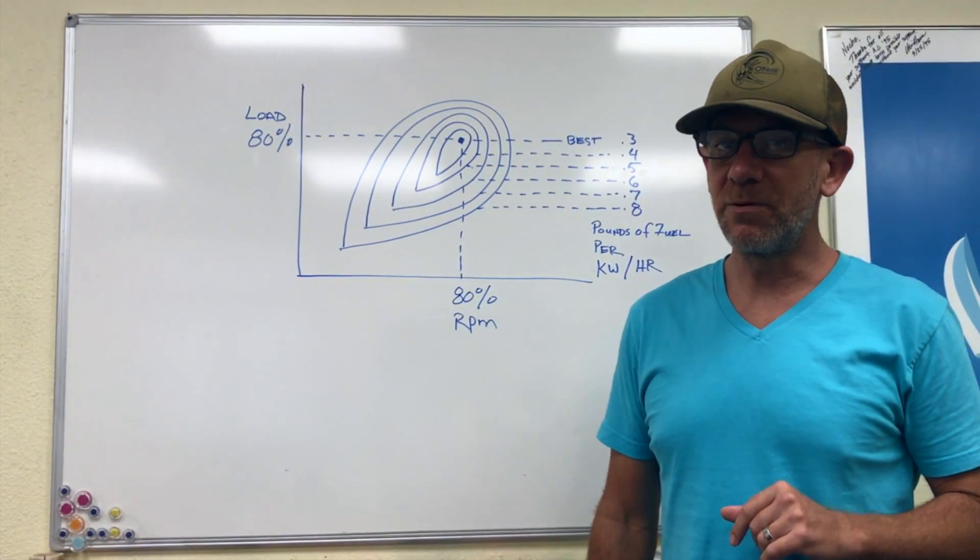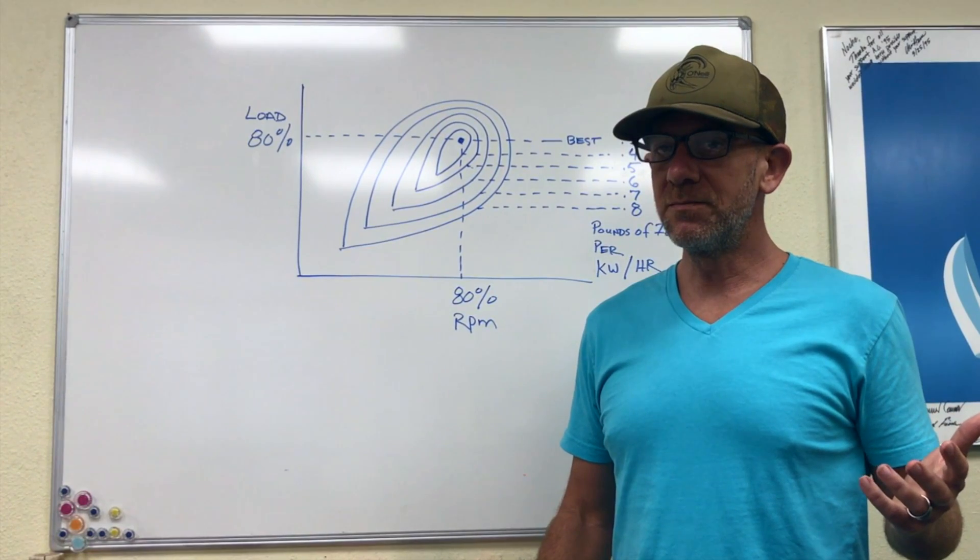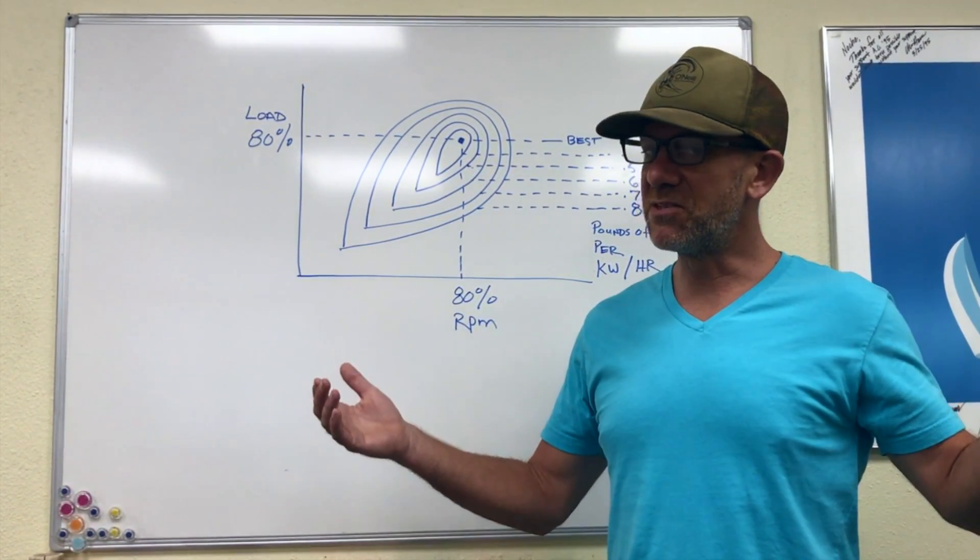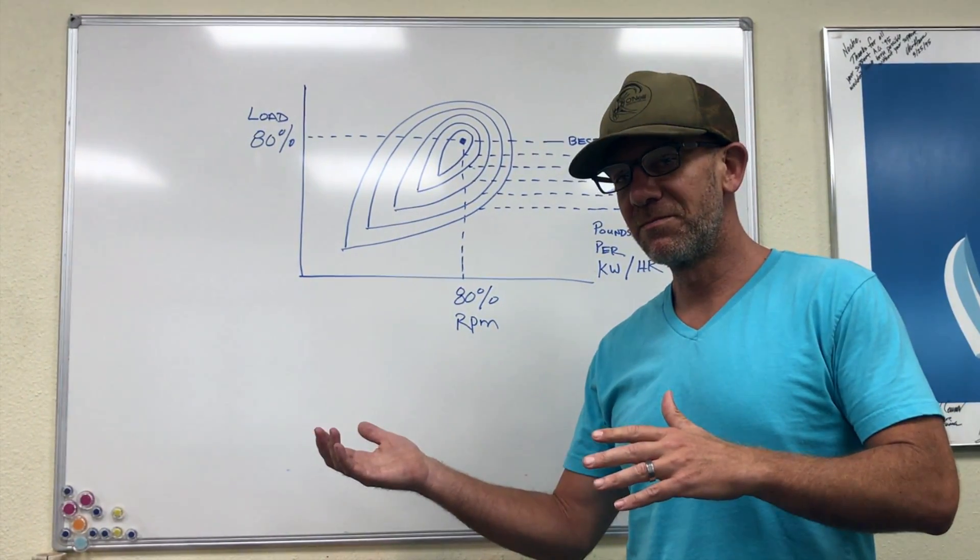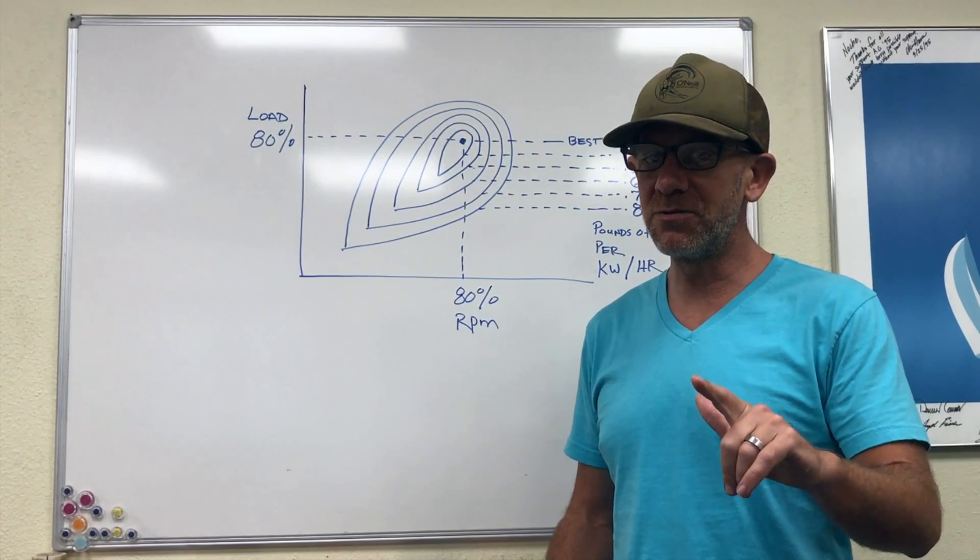Today we're going to talk about what it takes to generate one kilowatt of power from a diesel generator. The quick answer: 80 cents to five dollars. If that's all you came for, feel free to click away now. If you want to know why that range, stay tuned.